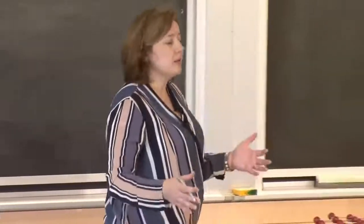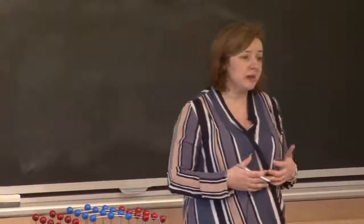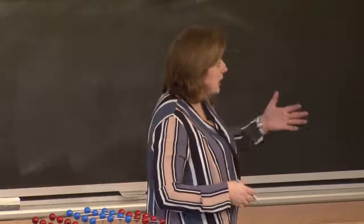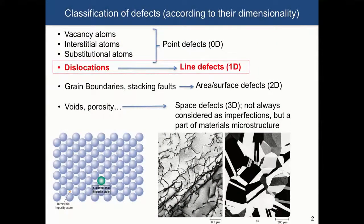We are right now in the stage of describing defects in materials, and defects really govern many of the properties of materials. In the last couple of lectures, we specifically talked about point defects, which can be either vacancies, interstitials, or substitutionals, and we talked about how they behave in different types of materials, whether metals or ionic crystals.